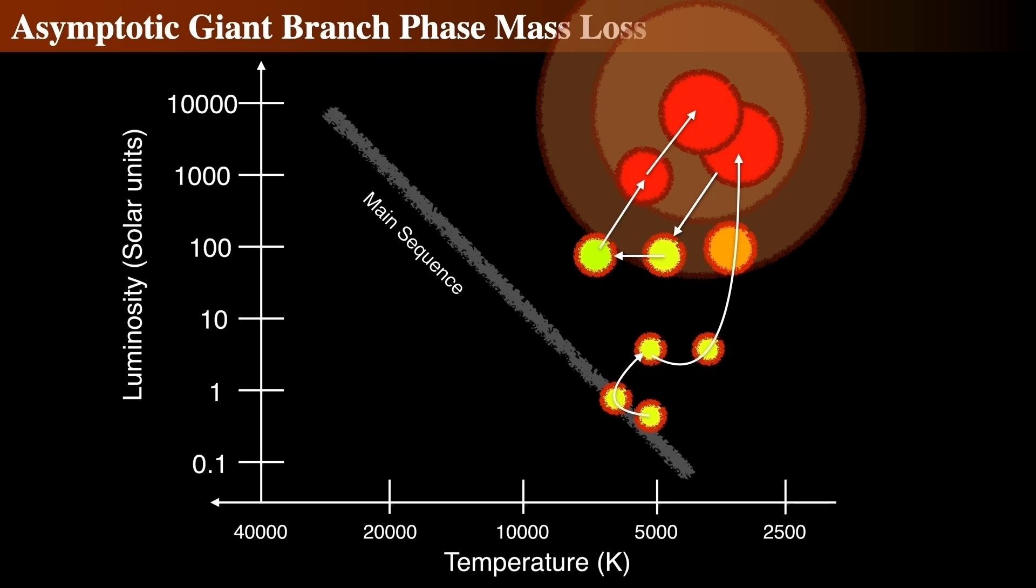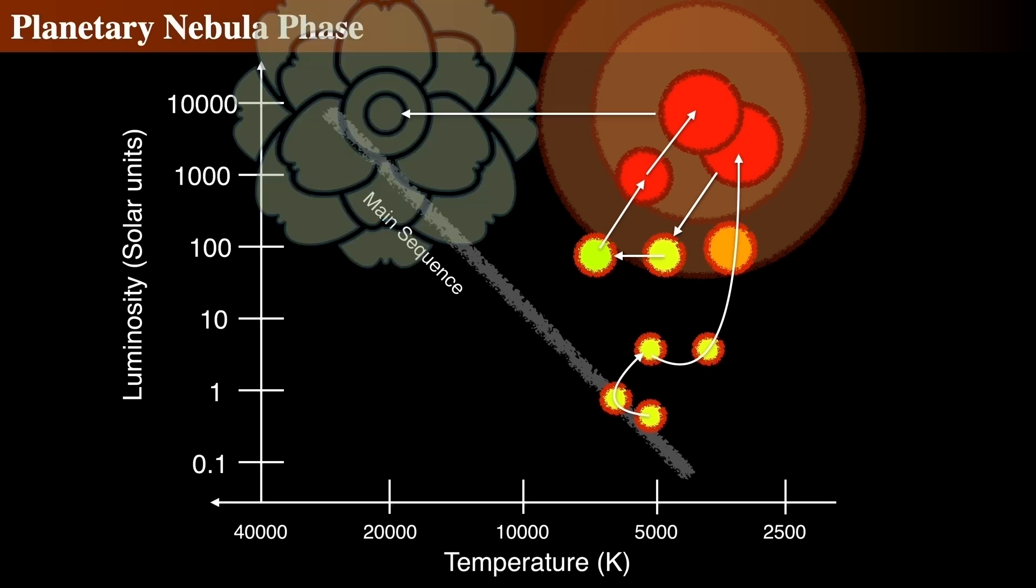This mass loss will happen, as we saw before, in a series of about a dozen or so puffs, where the star's radius radically increases, leading to mass loss, followed by contraction and an even larger puffed-up radius. The last of the thermal pulses blows off what is left of the envelope over the course of a few thousand years.